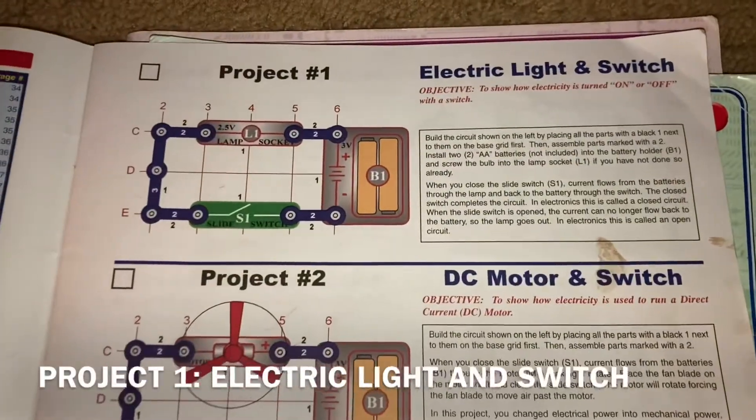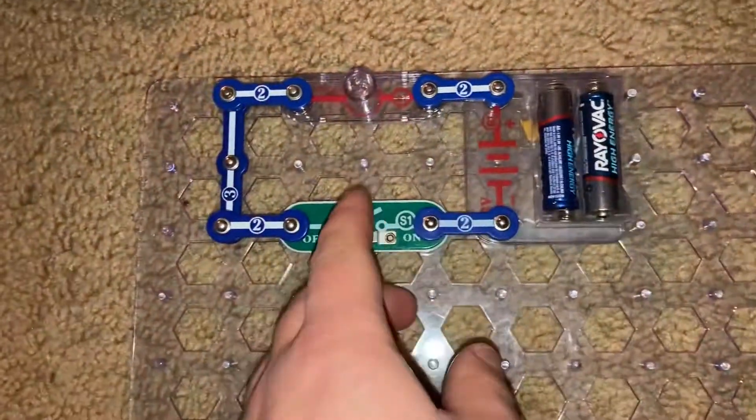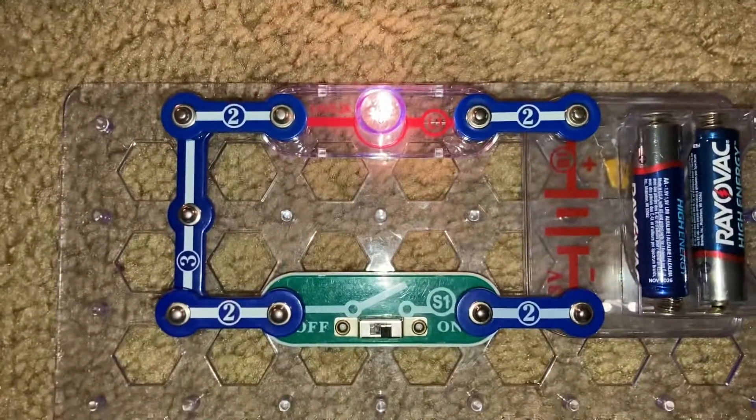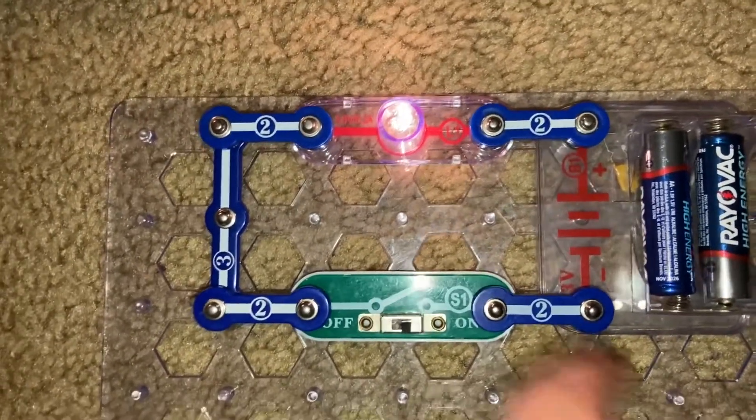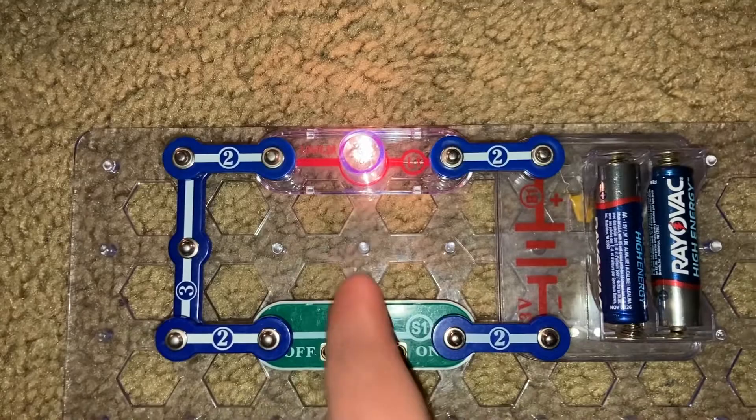Project one is electric light and switch. You just turn on the slide switch and the L1 lamp comes on. This lamp is 2.5 volts.